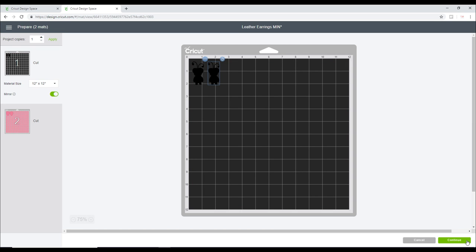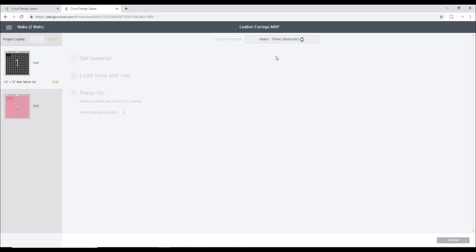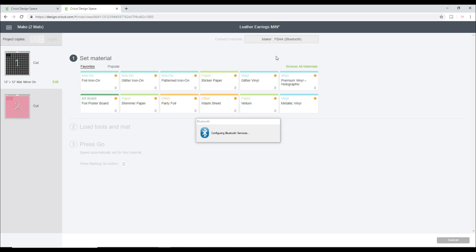We can then go to Continue. I am using my Maker today, but if you're using one of the earlier machines like your Explore or your Air, you can still use the metallic leather. You just want to make sure that you turn your dial to Custom and use the deep cut blade. For layer one I'm going to use foil iron-on.